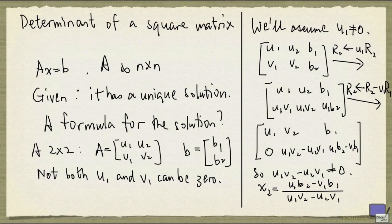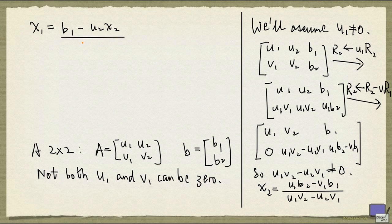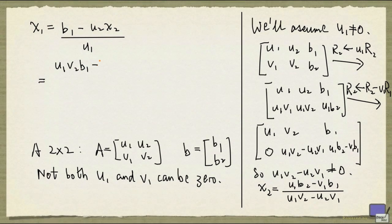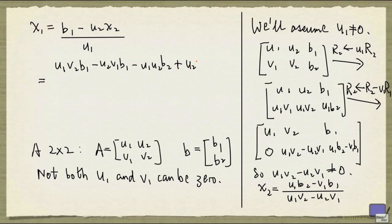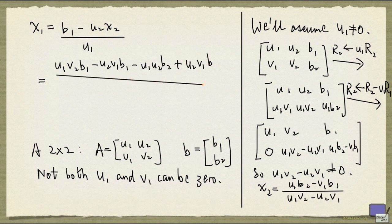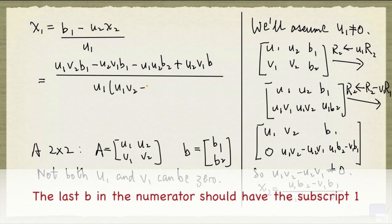And from this, you can get x1 as well. So x1 is going to be b1 minus u2 times x2, and then divided by u1, and that will give us u1 b1 v2 minus u2 b1 v1 minus u1 u2 b2 plus u2 v1 b2, all divided by u1 times u1 v2 minus u2 v1.